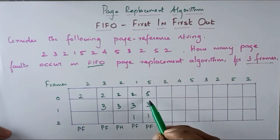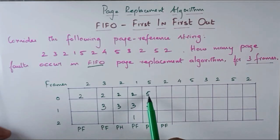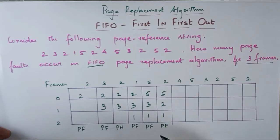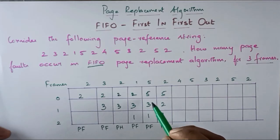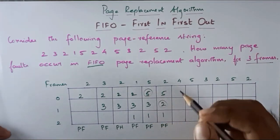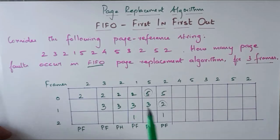Again, 2 — 2 is already there, so page fault? No — 2 is replaced. Replace. First insert 2, replace. Next, 3 is replaced. So 5. In the order — first in, first out page replacement. Workout complete.